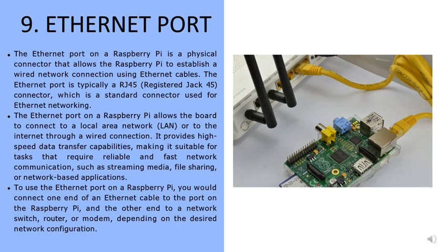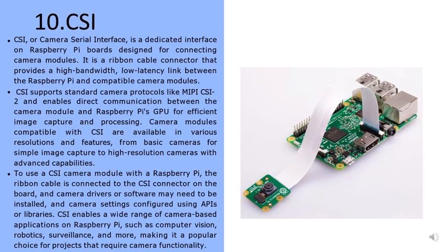To use the ethernet port, connect one end of the ethernet cable to the port on the Raspberry Pi and the other end to a network switch, router, or modem depending on the desired network configuration. The next component is the CSI, or Camera Serial Interface, which is a dedicated interface on Raspberry Pi boards designed for connecting camera modules. It is a ribbon cable connector that provides a high-bandwidth, low-latency link between the Raspberry Pi and compatible camera modules, supporting standard camera protocols like MIPI CSI-2.